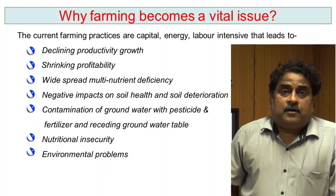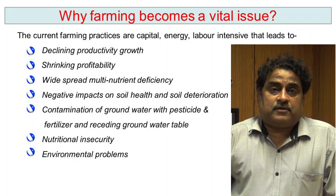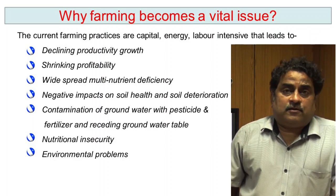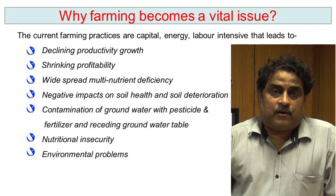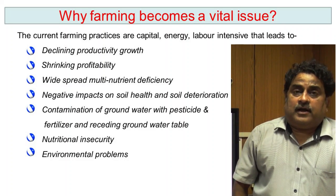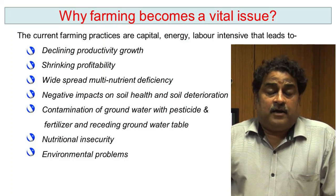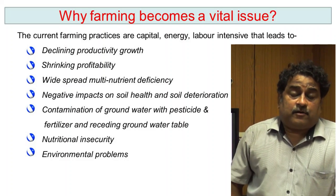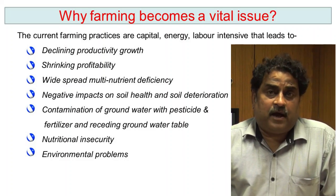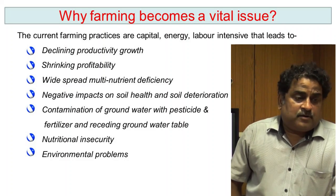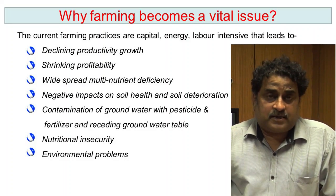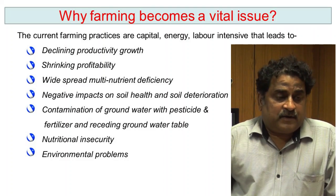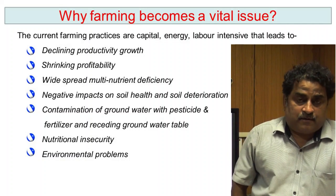The nitrogen applied in fields is lost through volatilization and leaching losses, and these leaching losses in the form of nitrate pollute our groundwater. In the Ludhiana and Punjab area, the nitrate level in water is becoming very high, causing various types of diseases like methemoglobinemia or blue baby syndrome.